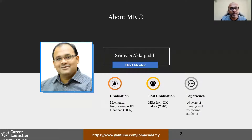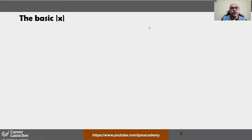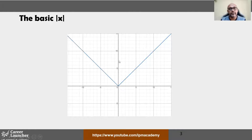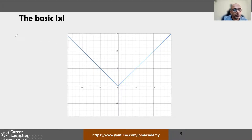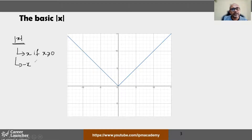Let's talk about first the basic graph of mod x. The basic graph of mod x — I'm sure all of you know — but this is how the graph looks. We need to understand how we got this graph. When you look at mod x, by definition this will be written as x if x is greater than or equal to 0, and as minus x if x is less than 0.